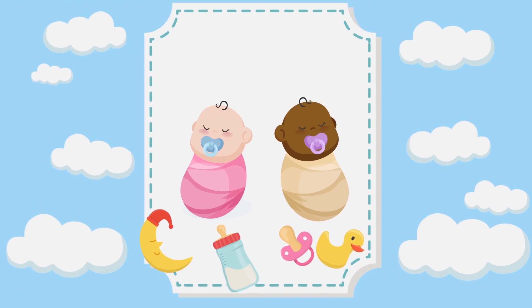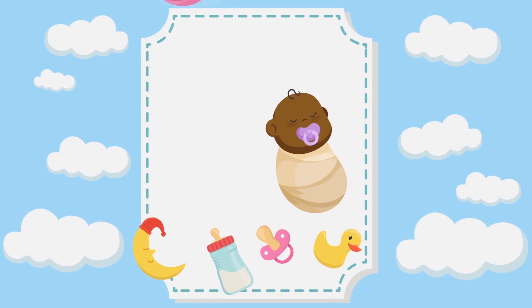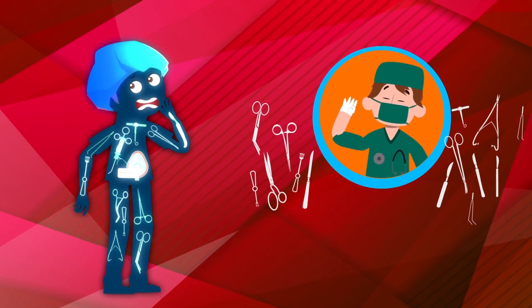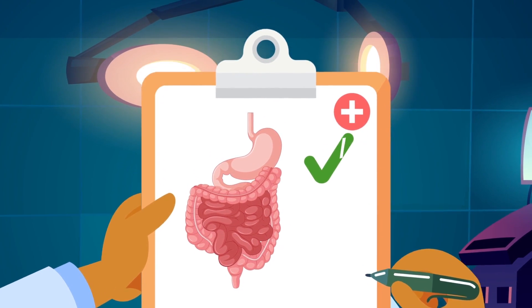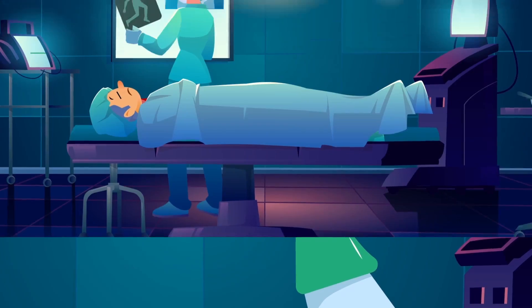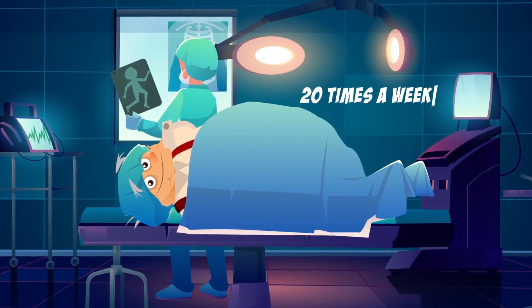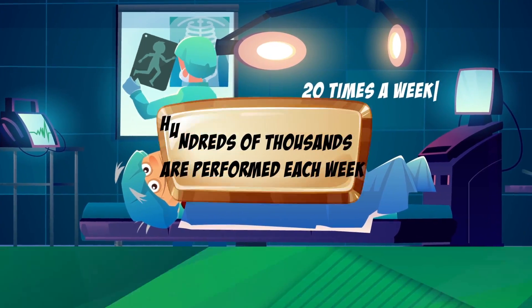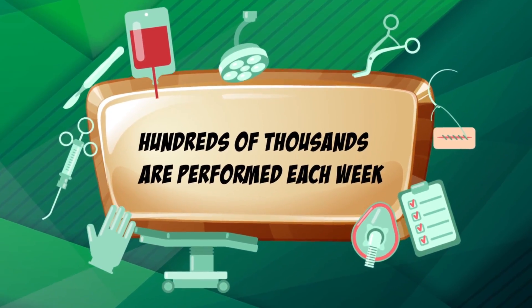But hold on here. Before we all start thinking being switched at birth or operating on the wrong patient is a common occurrence, let's go to the facts. According to statistics, United States doctors accidentally leave medical tools or supplies inside a patient they are operating on about 39 times a week. Also, a doctor will accidentally operate on the wrong body part about 20 times a week and will operate on the wrong patient also at about 20 times a week. Now, maybe that sounds like a lot. But millions of surgeries are performed each year in the United States, which means hundreds of thousands are performed each week. It's rare, Brainyard. Very rare.